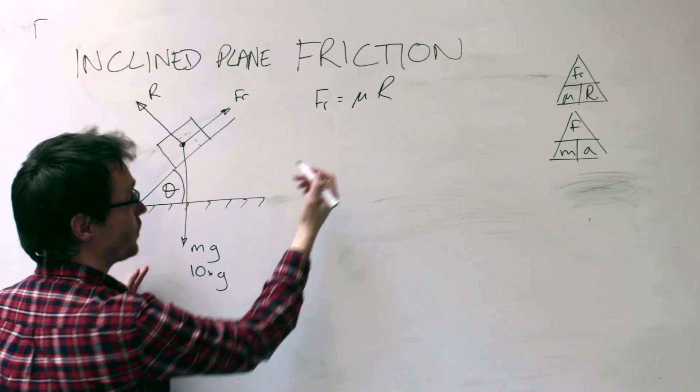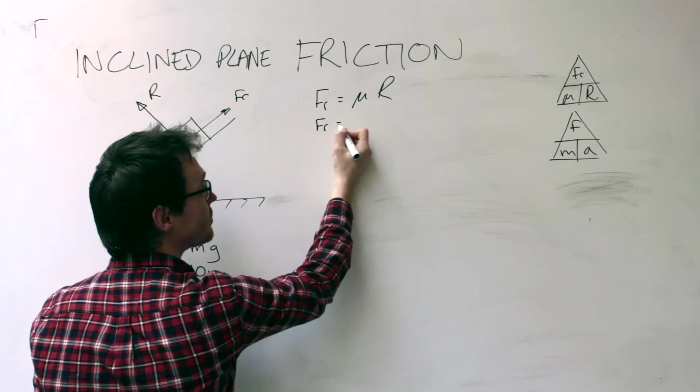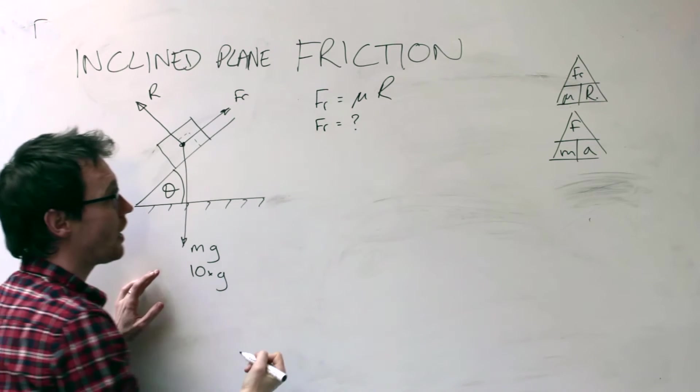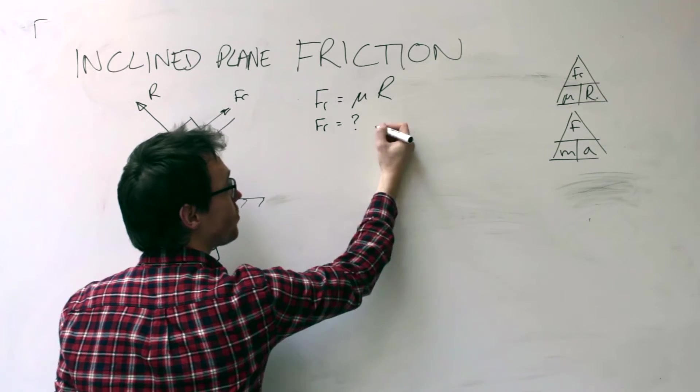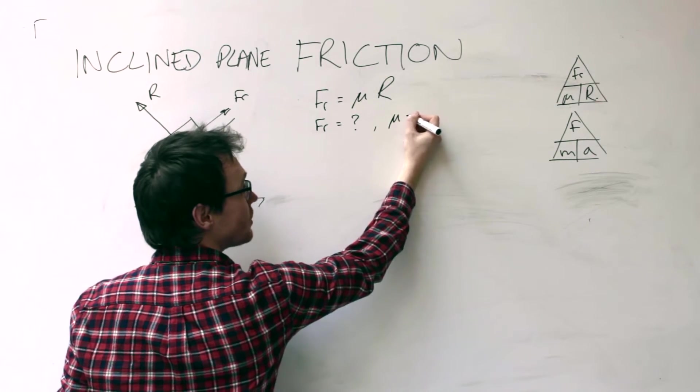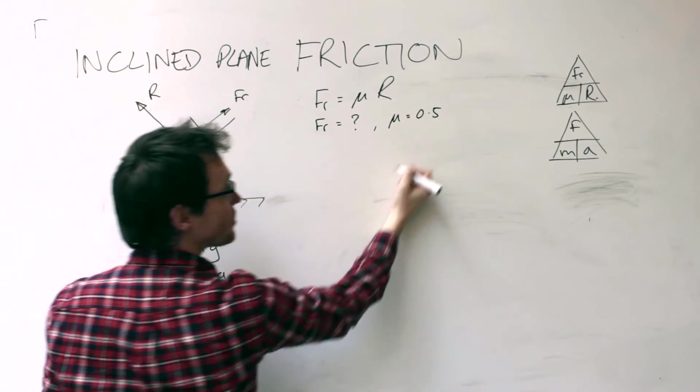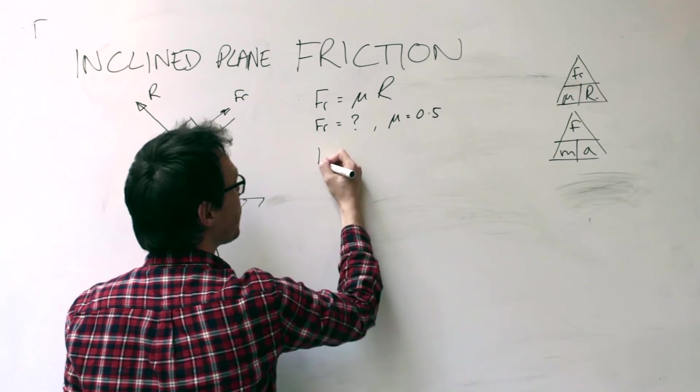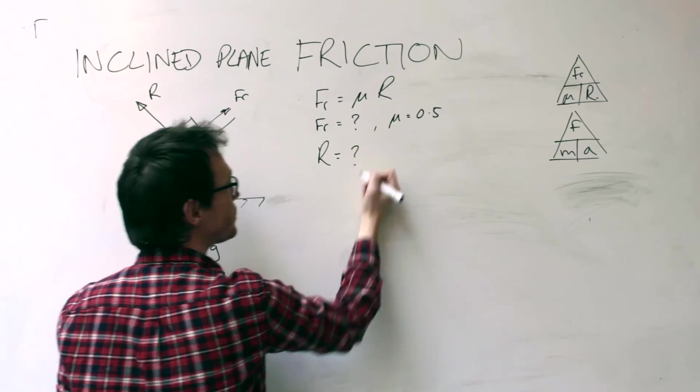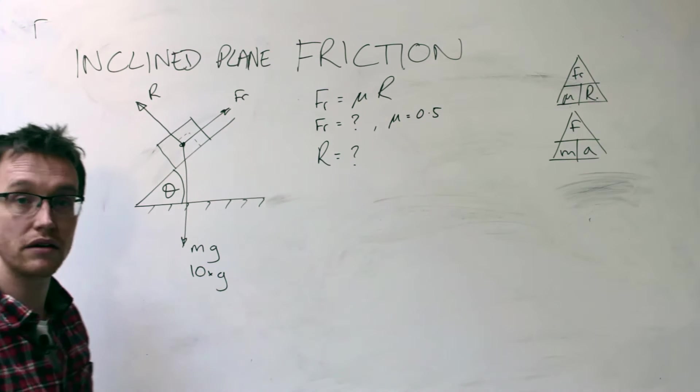So the friction we don't know yet. Mu we're going to be given as 0.5, and if you're confused on how to draw that, it's just a u with a long tail. And the reaction force we don't yet know.